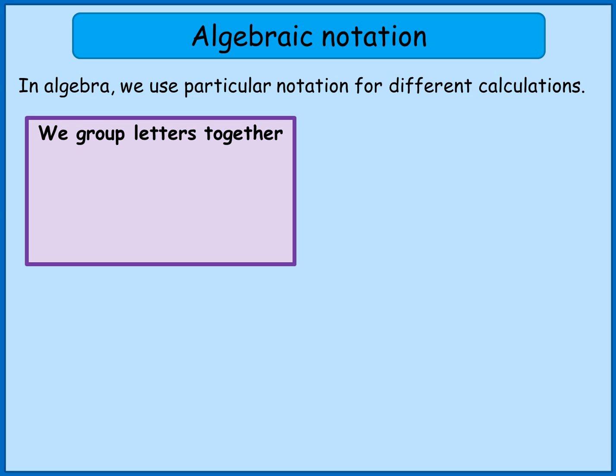We use particular notation for different calculations. The first thing we do is we group letters together. In algebra, you commonly see letters representing variables or amounts that we don't know. So if I had something like a plus a plus a, that means three lots of a.